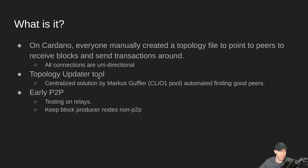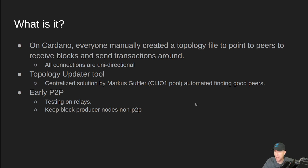Back in those days, it was a little bit difficult to find peers. So Marcus Guffler from Clio1Pool created a topology updater tool. This is a centralized solution, but it allowed everybody running nodes to report, hey, I'm up, I'm running, I'm able to accept peers. And then other people could connect to that same service and say, give me a good list of active peers. That helped everybody build their topology files. That's still running today and some people still use it.